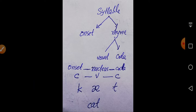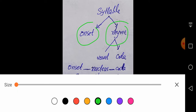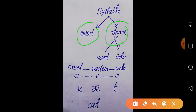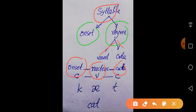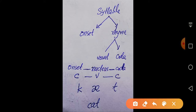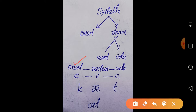Before I talk about consonant clusters, I would like to talk about the structure of a syllable. A syllable has two main parts: one is known as onset and another one is known as rhyme. The rhyme further consists of a vowel and a coda. So we can simplify this structure: a syllable consists of onset, nucleus, and coda. Rhyme further consists of two parts — nucleus and coda. So for BS students, there are three main parts: onset, nucleus, and coda.